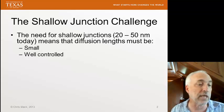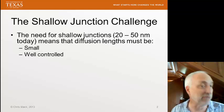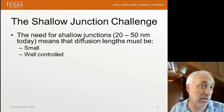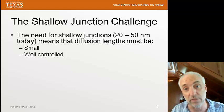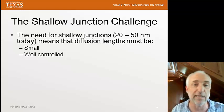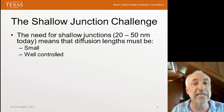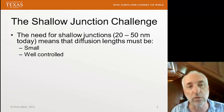Why do we need shallow junctions? This goes all the way back to Dennard scaling. When we shrink a transistor, we have to shrink everything — the widths, but also the heights, the z dimensions, the depths — and that means the junction depths as well. So we need small diffusion lengths that are well controlled.